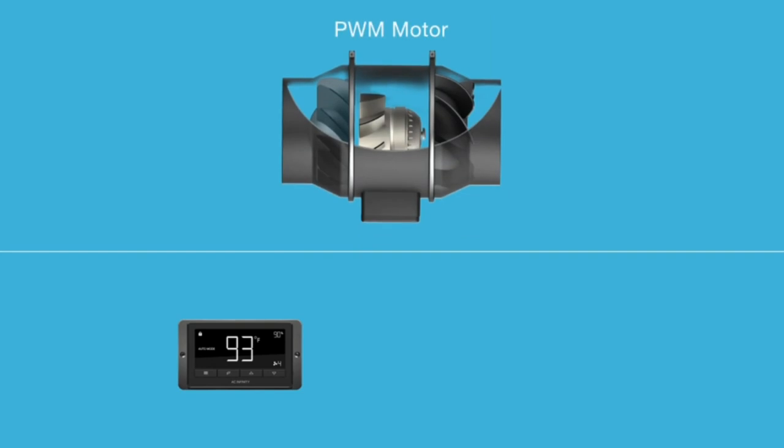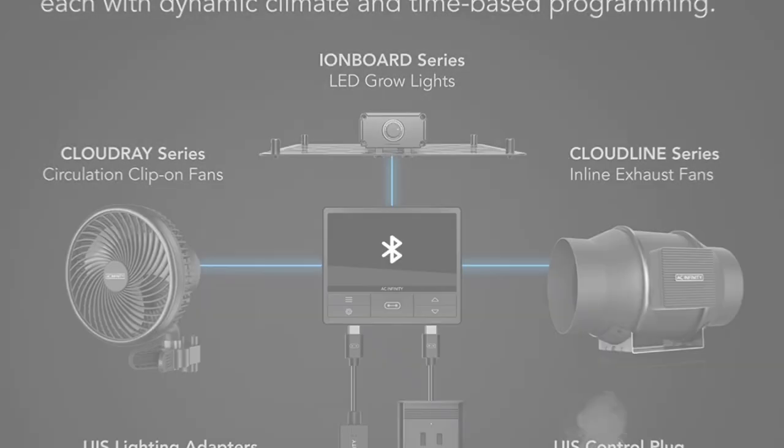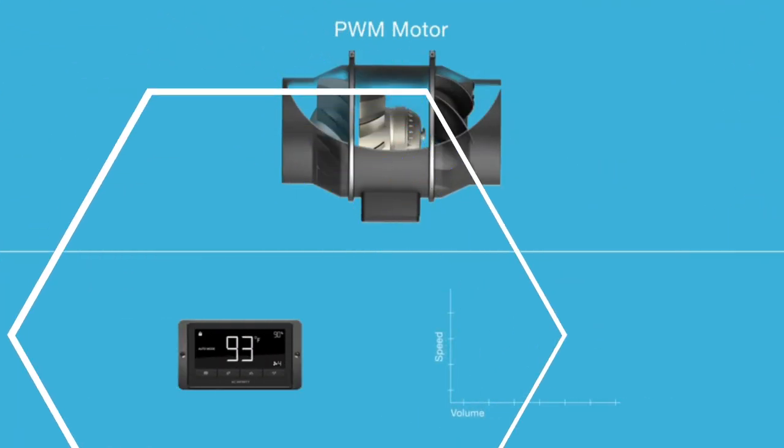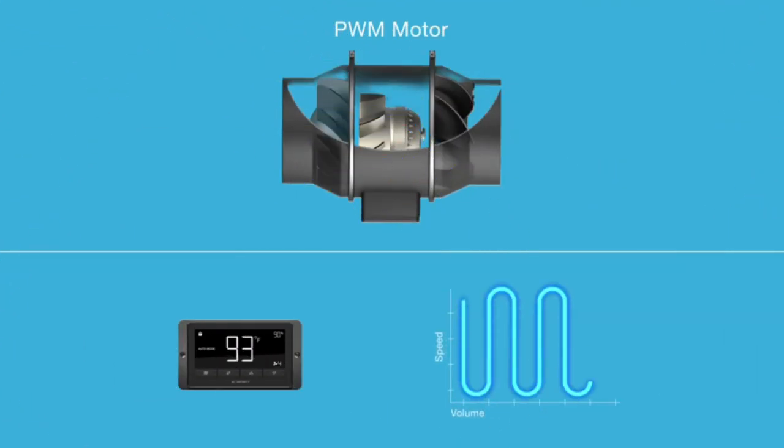What's more, this inline duct fan has a noise level of 28 dB, which is very quiet. More powerful models of the Cloudline series can reach 32 dB, delivering up to 402 CFM.